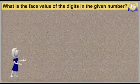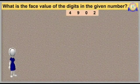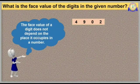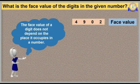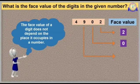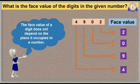What is the face value of the digits in the given number 4902? The face value of a digit does not depend on the place it occupies in a number. Therefore, the face value of digit 2 is 2, the face value of digit 0 is 0, the face value of digit 9 is 9, and the face value of digit 4 is 4. I hope you understood the concept of face value.